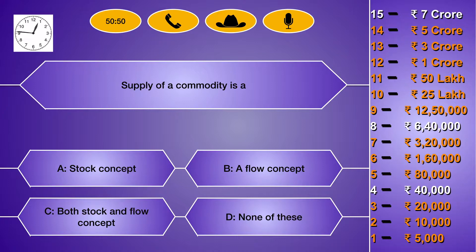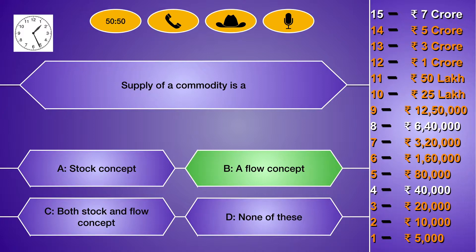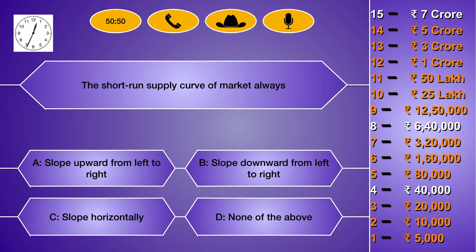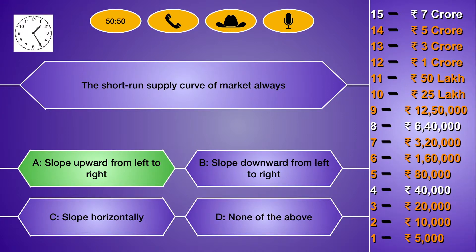Supply of a commodity is: (A) a stock concept, (B) a flow concept, (C) both stock and flow concept, (D) none of these. The right answer is (B) a flow concept. A short-run supply curve of market always: (A) slopes upwards from left to right, (B) slopes downwards from left to right, (C) slopes horizontally, (D) none of the above. The right answer is (A) slopes upward from left to right.